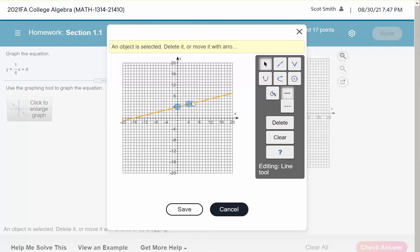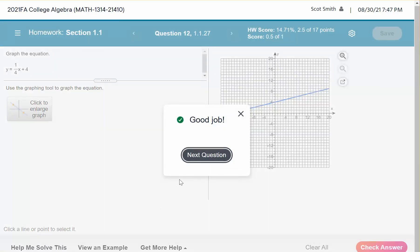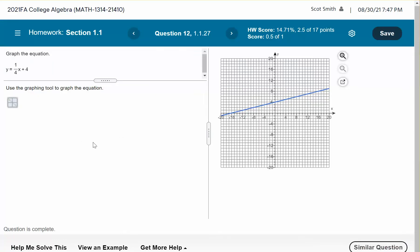We could go up 1 and right 4 again, and we would get to another point. But again, we're only using 2, so let's go ahead and save that and check our answer. And you can see that's going to be it. All right, I hope that helps. Let me know if you have any more problems.